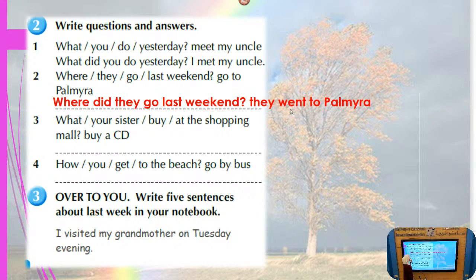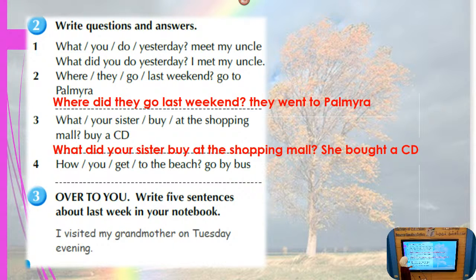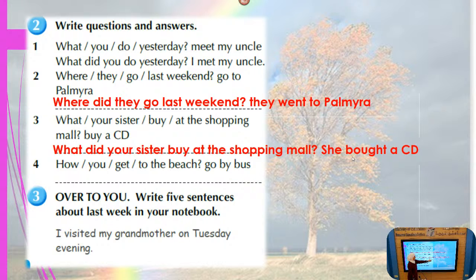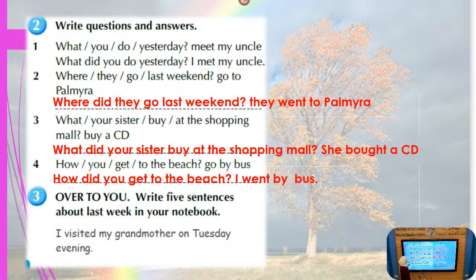'What did your sister buy at the shopping mall?' She bought a CD. We used 'did' in the question plus verb one, and the answer uses 'bought'. 'How did you get to the beach?' — 'I went by bus.' If you want, you can write five sentences about last week in your notebook. It's a good exercise for you.